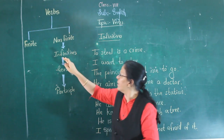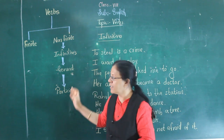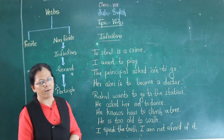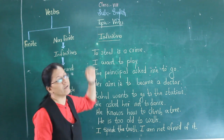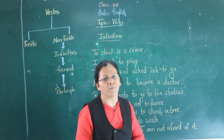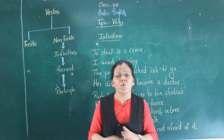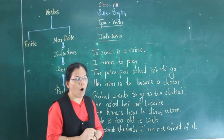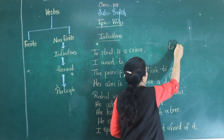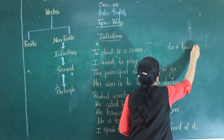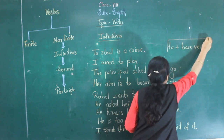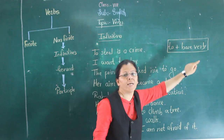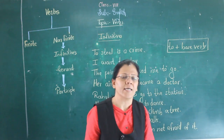In non-finite verbs, we have infinitives, gerunds, and participles. Let us learn all three concepts one by one. We will start with infinitives. What is an infinitive, and how is it formed? An infinitive is formed by adding 'to' to the base verb. When we add the word 'to' to the base verb, it is called an infinitive.